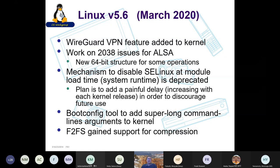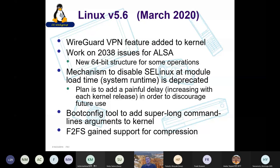Linux 5.6, released in March 2020, had the WireGuard VPN feature added to the kernel. It also had some work on year 2038 issues, particularly for ALSA — the sound system inside the kernel — where new 64-bit structures were added for some of its operations.